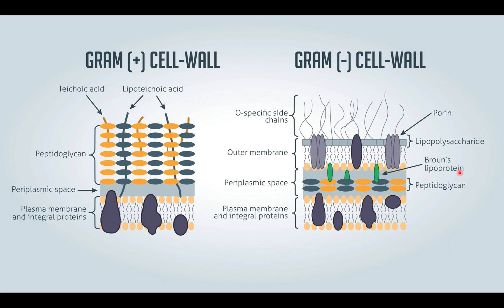If you've watched my gram-positive videos, you're probably very familiar with this diagram. It shows the basics of the gram-positive cell wall versus the gram-negative cell wall. As you can see, the gram-negative cell wall is quite a bit more complex. Most obviously, there is a slightly thinner peptidoglycan layer, and you also see a double phospholipid bilayer — an outer membrane and an inner membrane. You need to be familiar with each of these components and what purpose they serve.